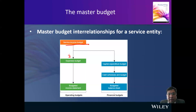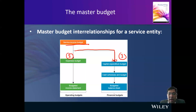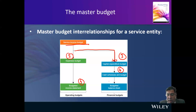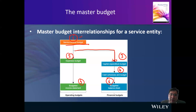Number two will be your expenses, and then number three is any new items you need to buy — a new machine, for example. Then you prepare your cash schedules: money in and money out. From there you prepare your budgeted income statement and budgeted balance sheet. The normal process is to first set the target revenue, then prepare your expenses to accommodate this goal.